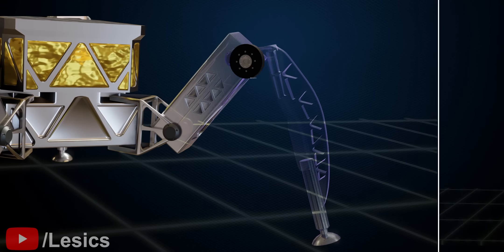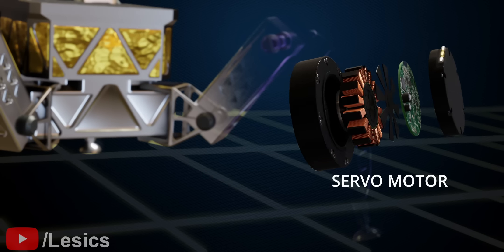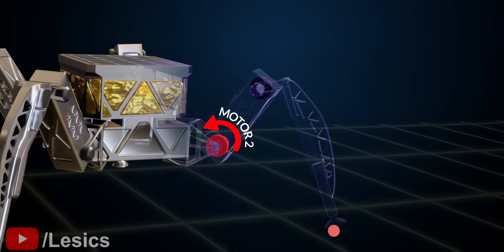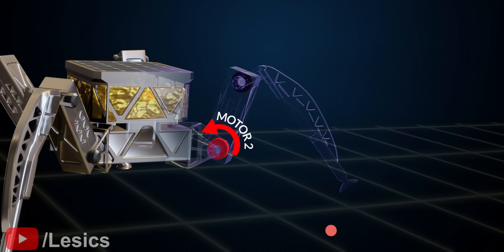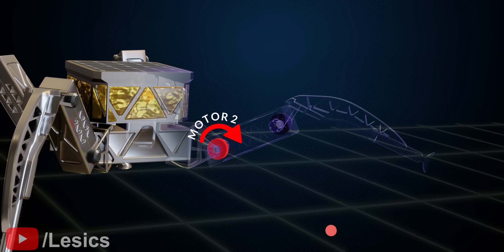This is accomplished with two servo motors. Firstly, motor two is rotated in an anti-clockwise direction, which causes the leg to be raised off the ground. Afterwards, motor one is rotated in the anti-clockwise direction to extend the leg. Lastly, motor two is turned clockwise to place the leg on the ground.